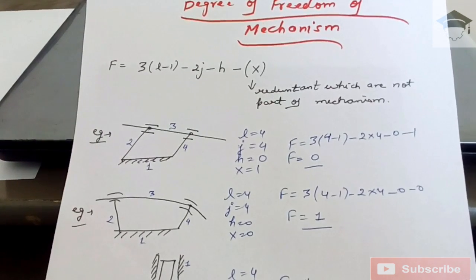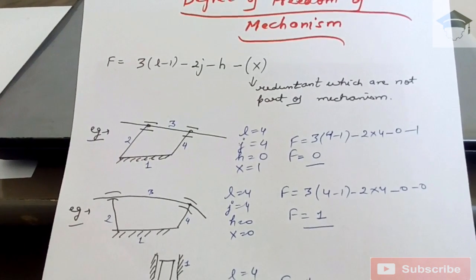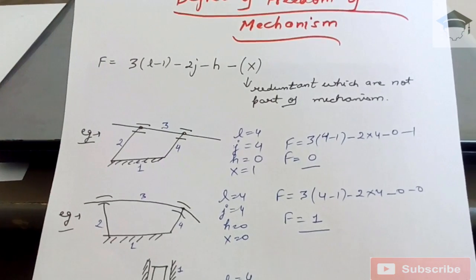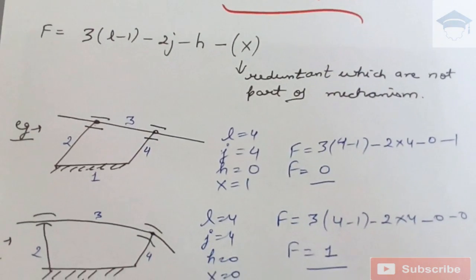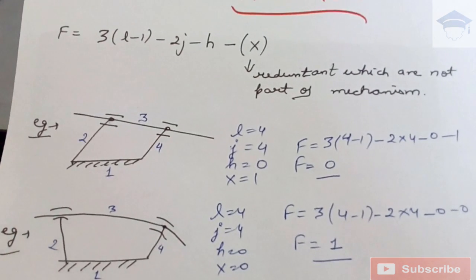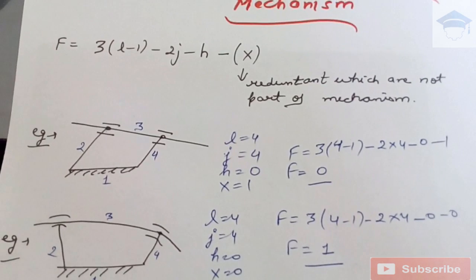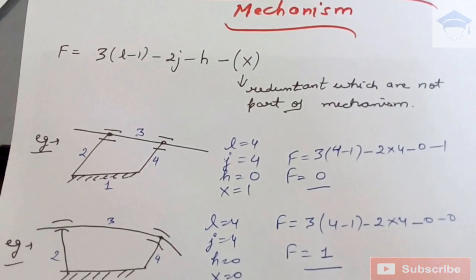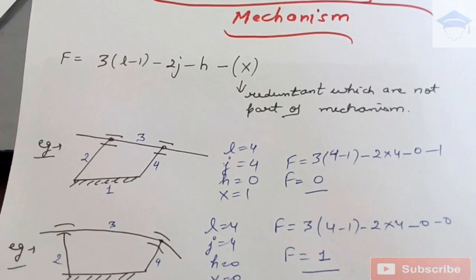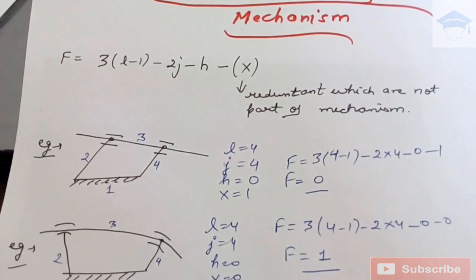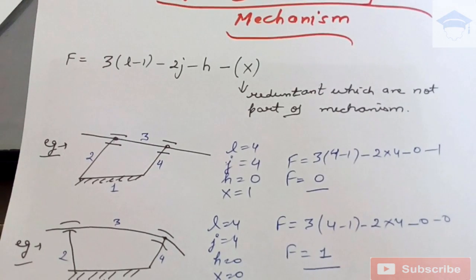Now, Example 1. In this mechanism there are four links: one, two, three, and four. The number of links is four. The number of joints is four — the joint of links one and two, one and four, three and four, and two and three. The number of higher pairs is zero because there is no line or point contact. x is equal to one.